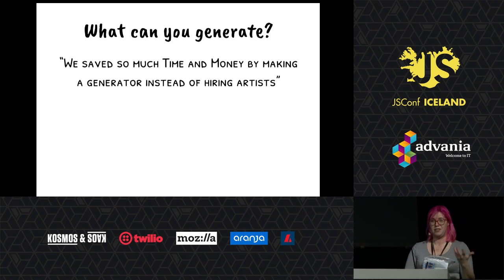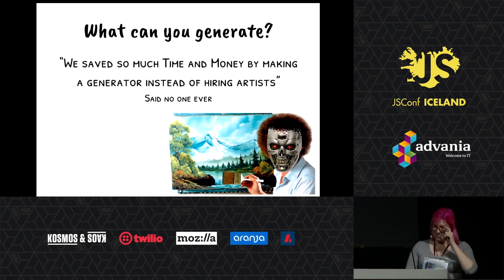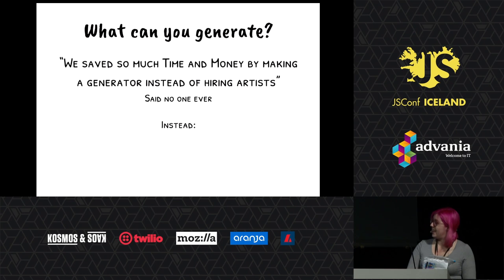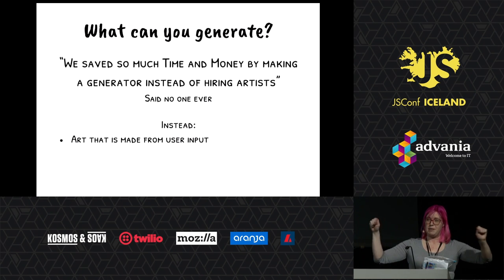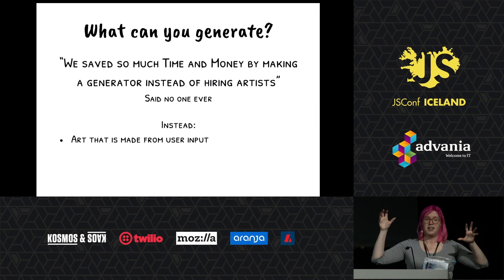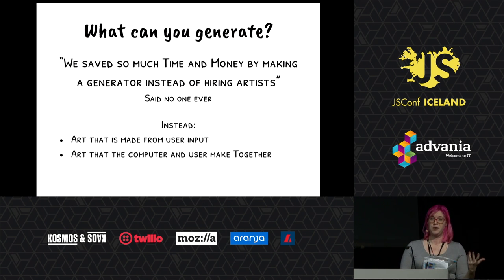A common theme with PCG talks is often: you can save so much time and money generating things, and you don't have to hire artists anymore. This actually doesn't work that great — you won't get robot artists. But instead, you can have art that's made from user input. In Spore, the users created these complex creatures, and then we could dynamically — on a millisecond level — skin them, texture them, animate them, so the player just feels like they're making magical clay. You can never have an artist sitting there modeling those millisecond by millisecond.